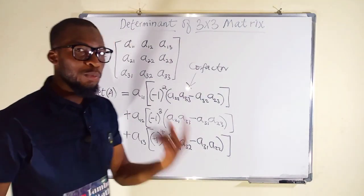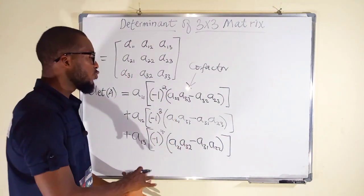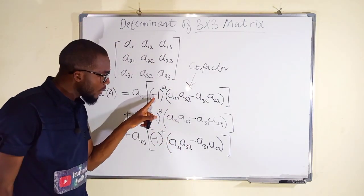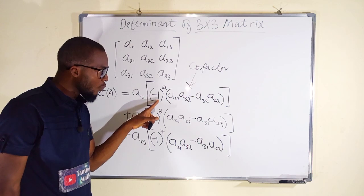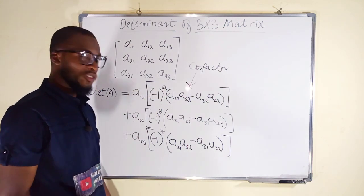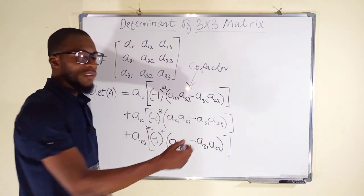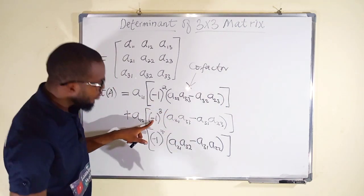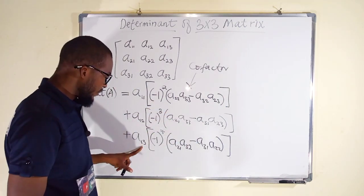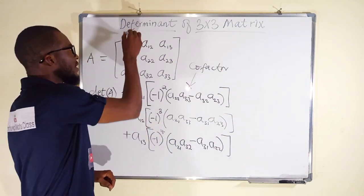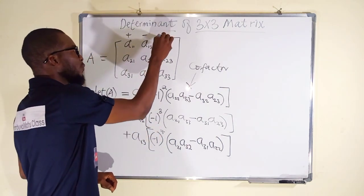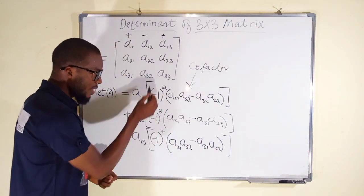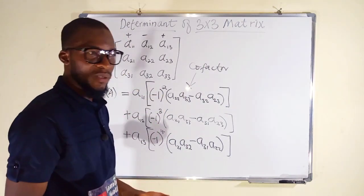Now let us solve two problems. In the first one, I am going to apply all these steps. In the second one, I am going to skip writing the negative 1 power terms, because negative 1 raised to the power of 2 is positive 1, and multiplying by positive 1 does not change the value. In the end, you realize the sign pattern for the first row is positive, negative, positive.